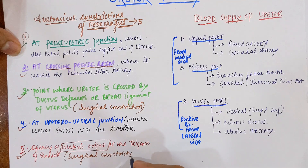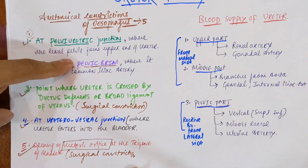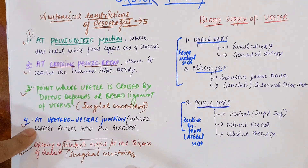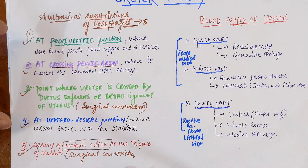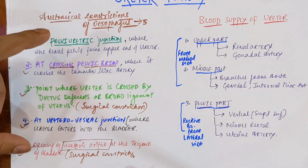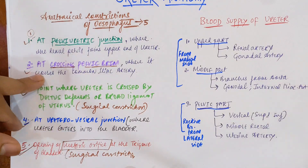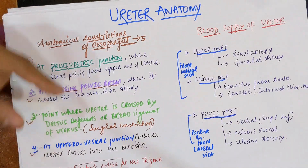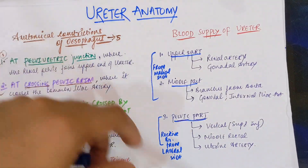In most books you will see only three constrictions listed: the pelvi-ureteric junction, crossing the pelvic brim, and the ureter-vesicle junction where the ureter enters the bladder. All five constrictions are from BDC. In Gray's Anatomy and Vishram Singh you will see only three constrictions, but those books note that the other two are surgical constrictions. You can refer to those books for clarification.